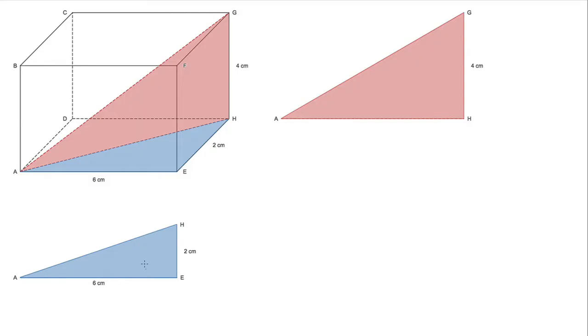Let's use Pythagoras on that. We've got AH squared equals 6 squared plus 2 squared. 6 squared is 36 and 2 squared is 4, so that's equal to 40.